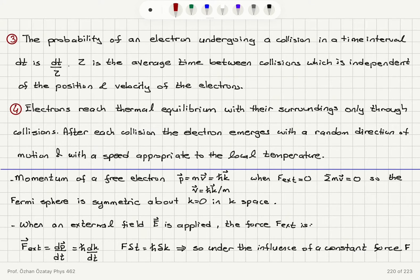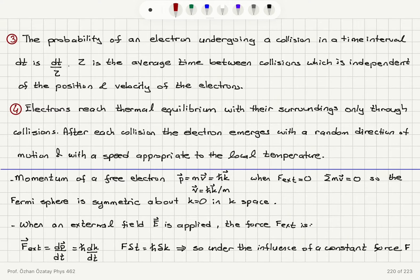Assumption four: electrons reach thermal equilibrium with their surroundings only through collisions. After each collision, the electron emerges with a random direction of motion and with a speed appropriate to the local temperature, as given by the equipartition theorem.